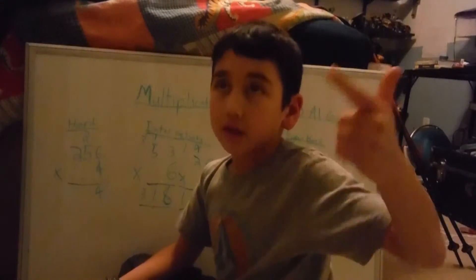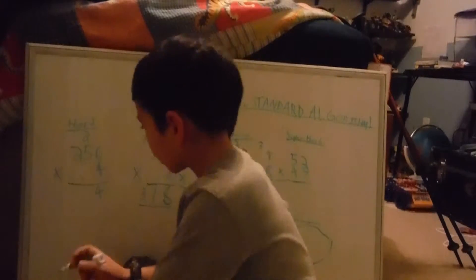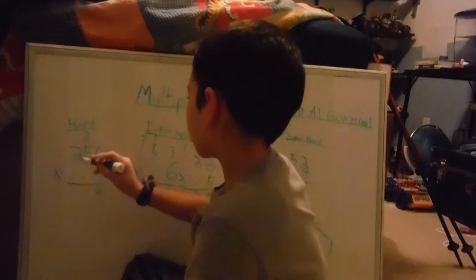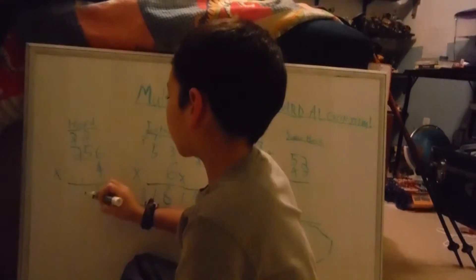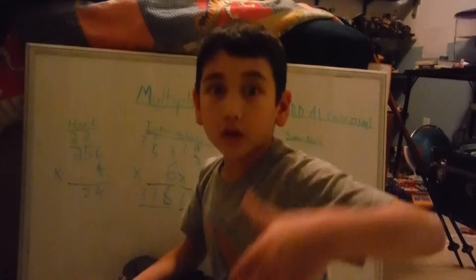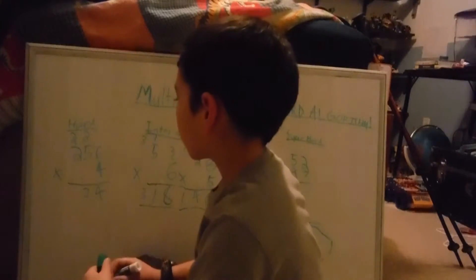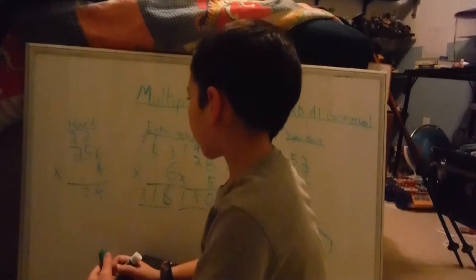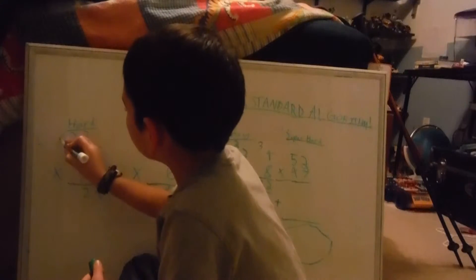And then you do 5 times 4, 5, 10, 15, 20. So then 20 plus that extra 2 is 22. And then 2 times 4 for 8. So that's 800 plus 20 is 820.